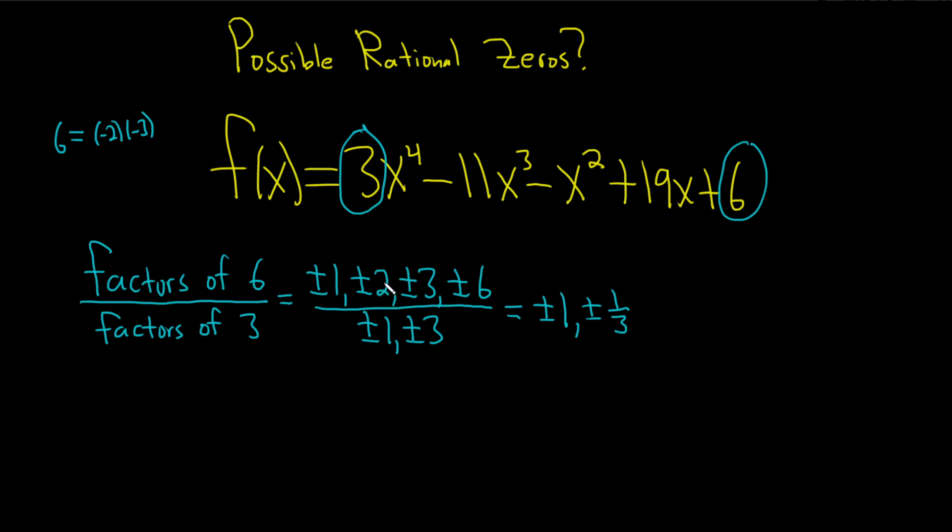Then you go to the next one, 2. 2 over 1 is 2. 2 over 3 is 2 over 3. And then you go to 3. 3 over 1 is 3.